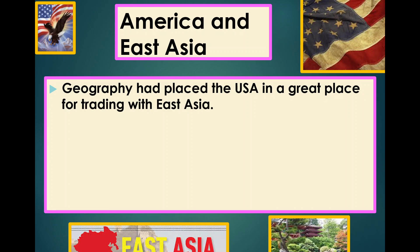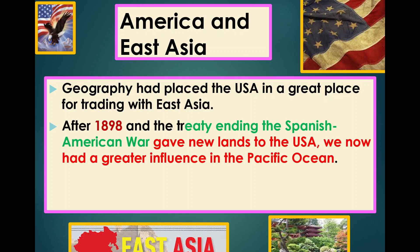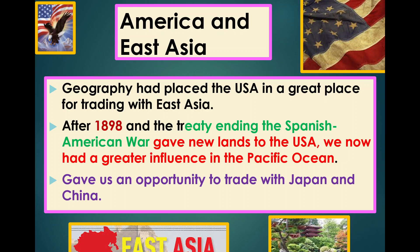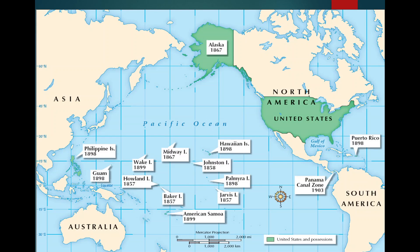Geography had placed the U.S. in a great position for trading with East Asia. After 1898 and the treaty ending the Spanish-American War, the American government gains new territories, and the United States acquires more territory in the Pacific to control trade with East Asia. This gives the U.S. the opportunity to deal directly with Japan and China — America sets up all these bases to control trade with the two largest economies in Asia, Japan and China.